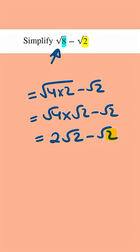Now we've got the same number underneath the root sign, and so we can combine these two surds. 2 times root 2 minus 1 root 2 is equal to 1 root 2, and so this is equal to root 2.